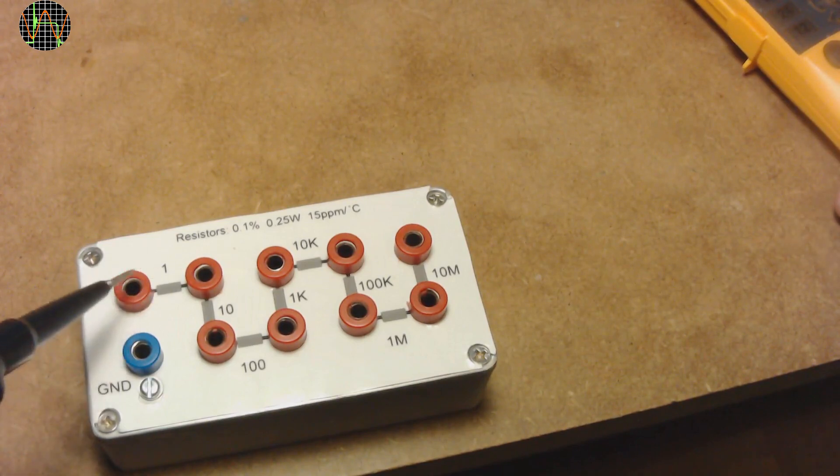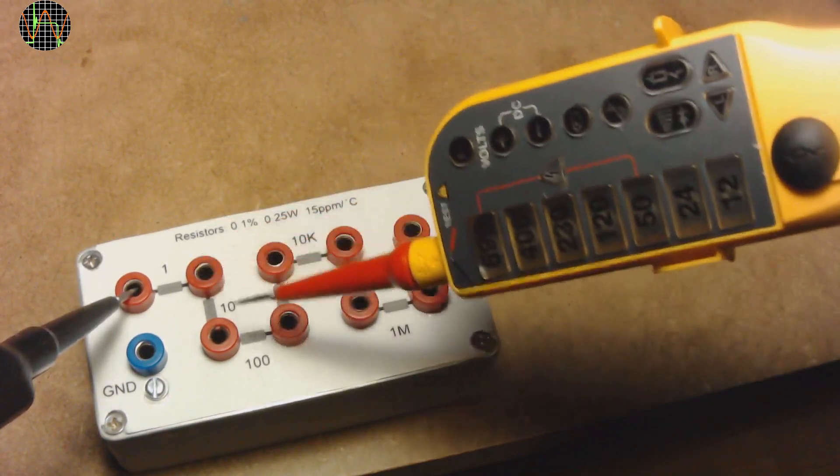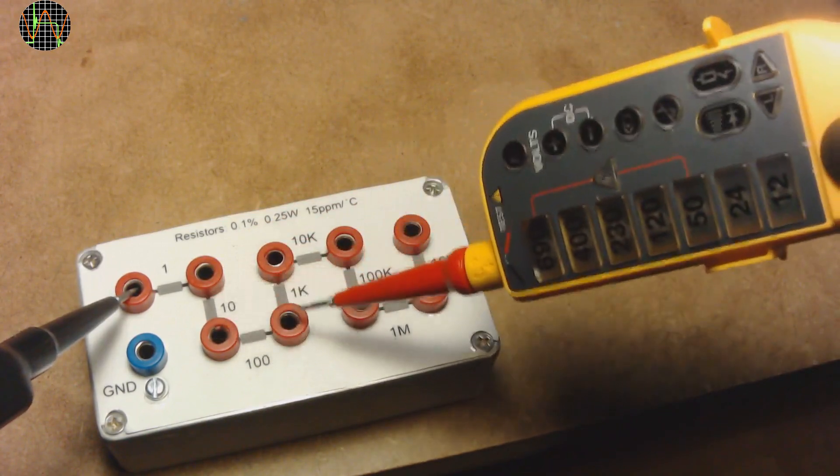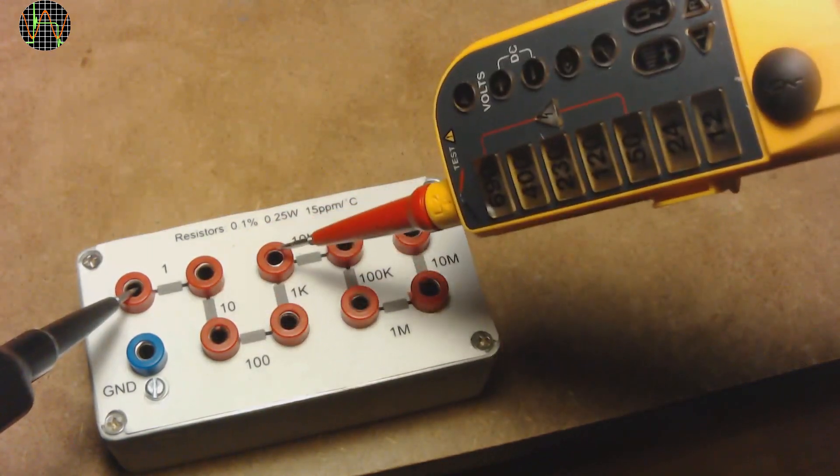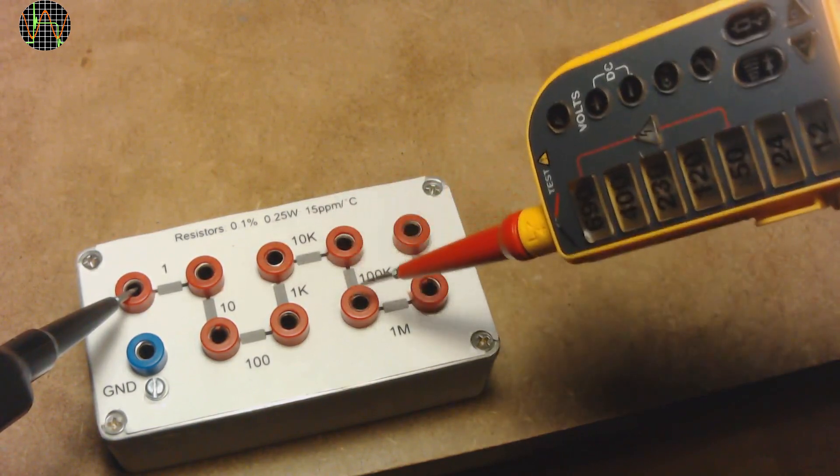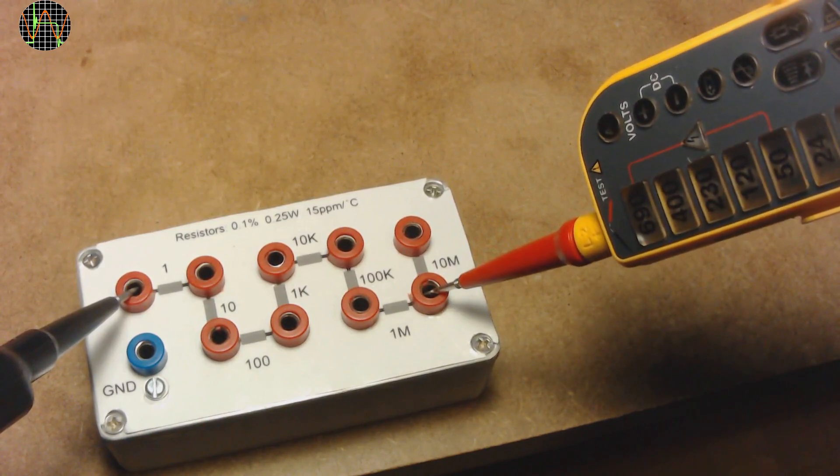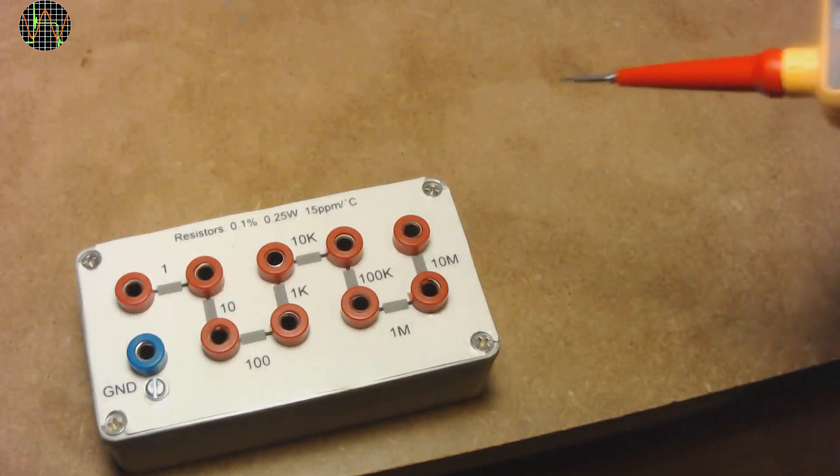Last test is the continuity. I am gradually increasing the resistance in powers of 10. As you can see, the probe indicates continuity all the way to the 100k resistor, which means a total resistance of 111k because all the previous resistors are in series. In fact, the spec says the limit for recognizing continuity is 400k.